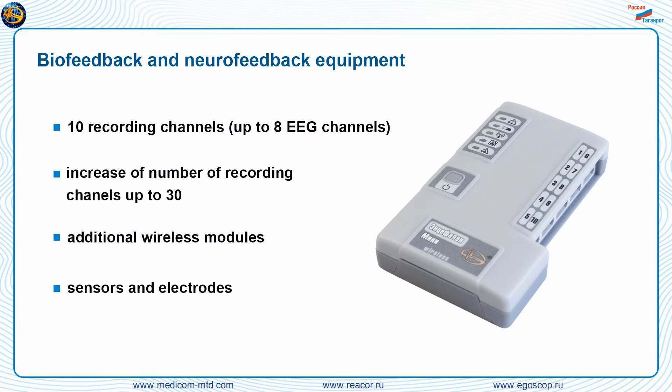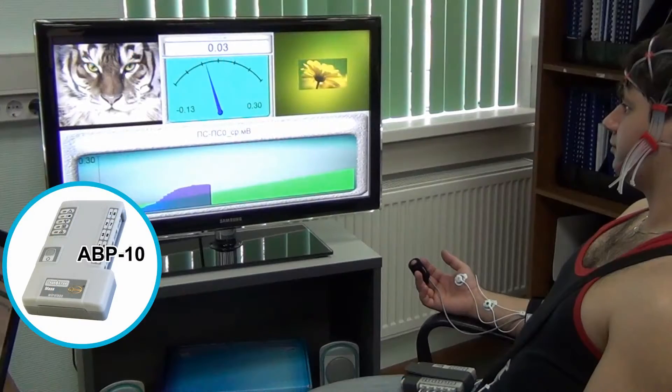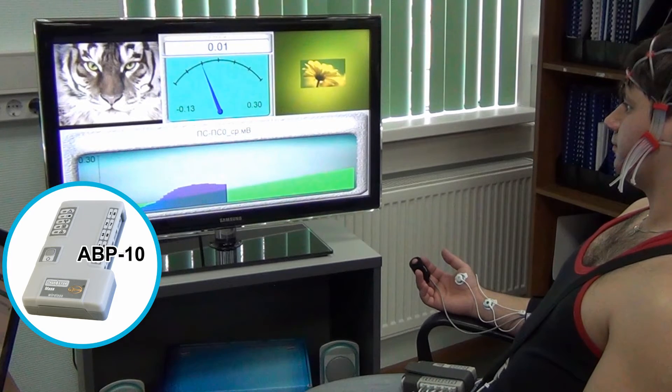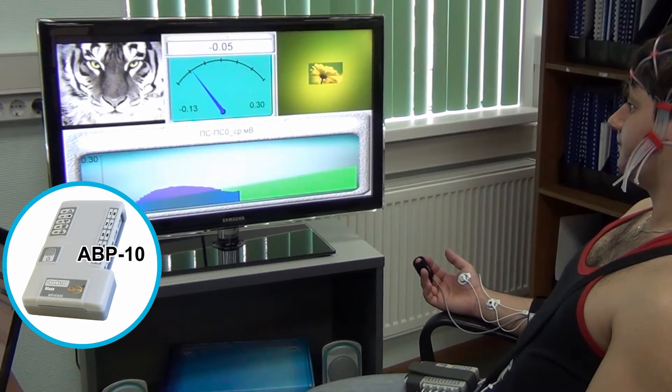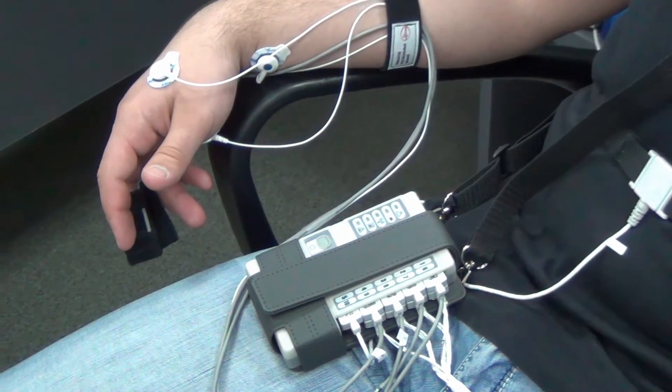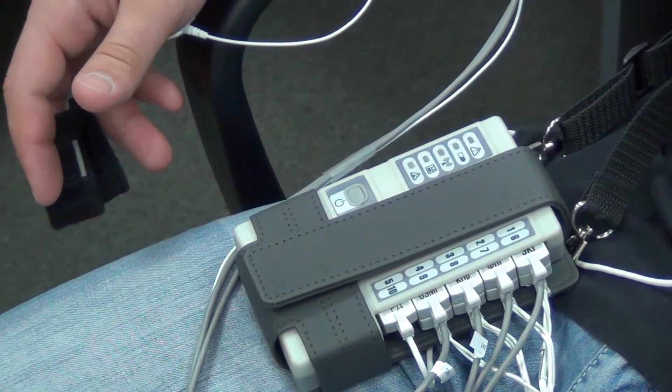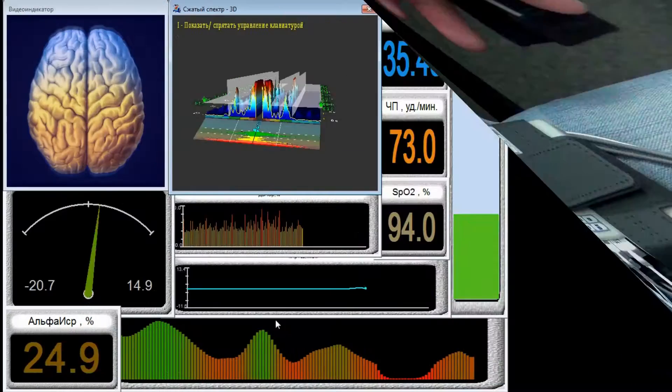Wireless basic unit is Autonomous patient transceiver recorder ABP-10, which includes 10 recording channels, up to eight EEG channels, additional wireless modules, increase of number of recording channels up to 30 sensors and electrodes.